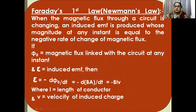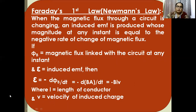Faraday's first law states: when the magnetic flux through a circuit is changing, an induced EMF is produced whose magnitude at any instant is equal to the negative rate of change of magnetic flux. If the magnetic flux linked with the circuit at any instant is Φ, and e is the induced EMF, then e = −dΦ/dt. Since Φ = B·A, this becomes e = −d(BA)/dt = −Blv, where v is the velocity of the charged particle and l is the length of the conductor.